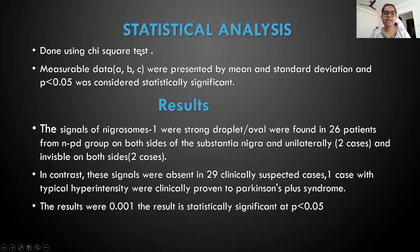Coming to the statistical analysis, done using chi-square test; measurable data A, B, C were presented by mean and standard deviation, and a p-value less than 0.05 was considered statistically significant.